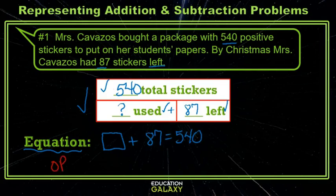Another equation we can do is to take the total minus the part that we know, and that will equal the part that we're looking for.